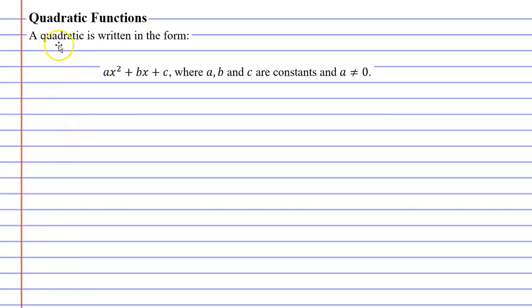So first of all, a quadratic function will be written in the form ax squared plus bx plus c. Now we are told that these pronumerals a, b, and c are constants, and that a cannot equal zero.